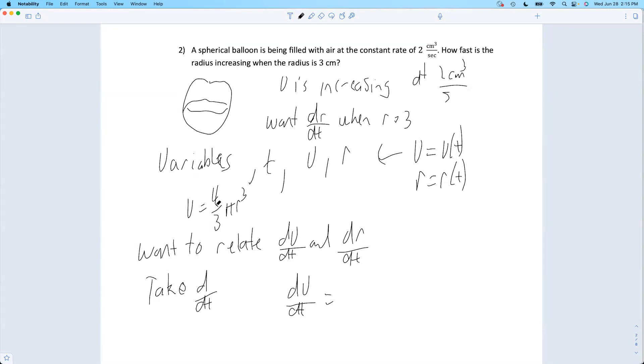The derivative, the 4/3 π comes along for the ride. The derivative of junk cubed would be 3 times junk squared times the derivative of what's inside. We have to use implicit differentiation. The derivative of r with respect to time is dr/dt.